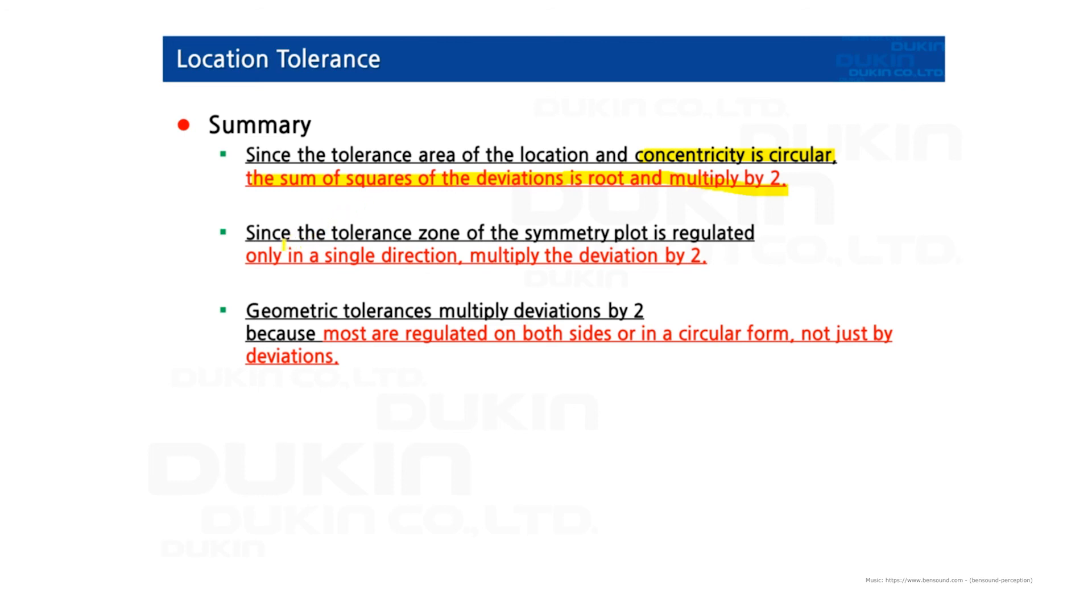And then also the symmetry. Since the tolerance zone of symmetry plot is regulated only in a single direction, that's why multiply the deviation by 2.